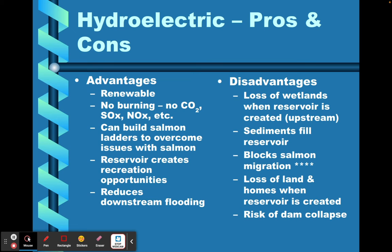Probably the biggest disadvantage is that dams block salmon migration — anadromous fish that are born in freshwater, go out to the ocean, and then return to freshwater. Blocking their migration is a big issue because they're an important part of the ecosystem and a great food source for people and animals.